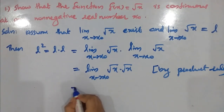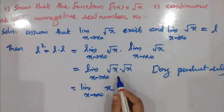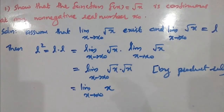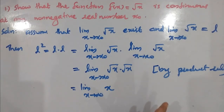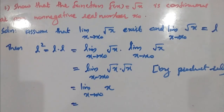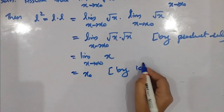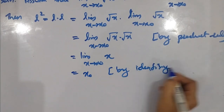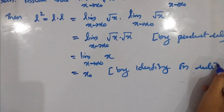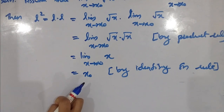This is √x times √x, and then x. The limit as x tends to x₀ of √x squared equals x. Then x equals x₀, by the identity function rule, which is equal to x₀ by the identity function rule.